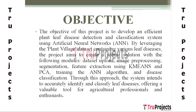The objective of the project is to create an efficient plant leaf disease detection and classification system using artificial neural networks, utilizing the PlantVillage dataset. The system includes dataset upload, image pre-processing, segmentation, feature extraction, training the ANN algorithm, and disease classification. This approach aims to accurately identify and classify leaf diseases, providing a valuable tool for agricultural professionals and enthusiasts.